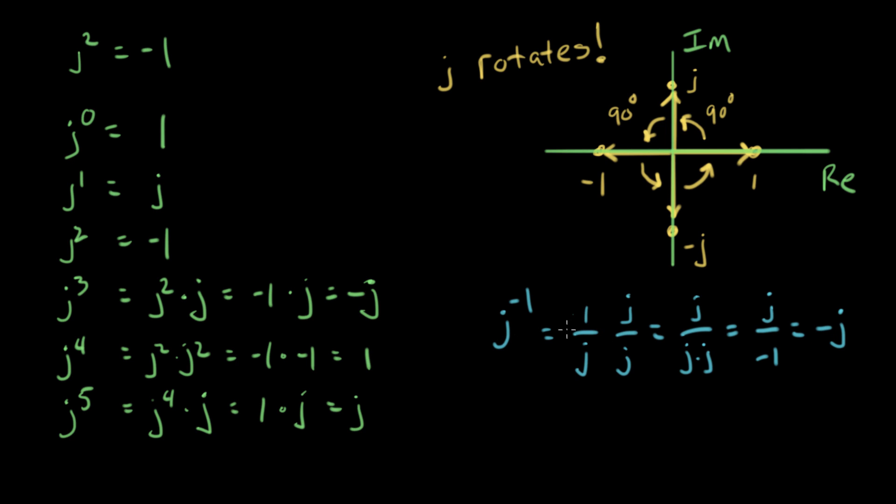So whenever we see J in a fraction, J to the minus one, basically it introduces a minus sign, and the J comes up to the top out of the fraction. So J to the minus one equals minus J. And we'll use that occasionally to help us in our math.